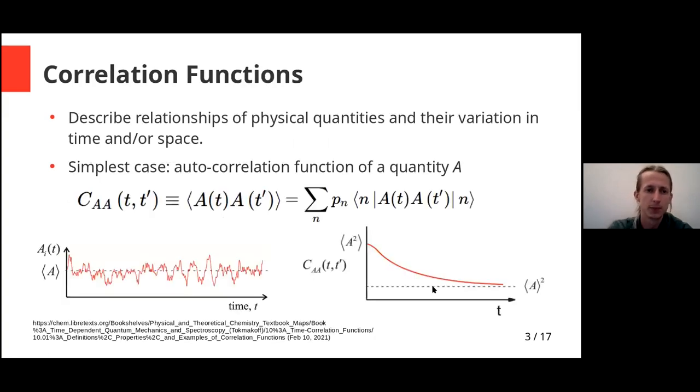So correlation functions describe the relationship between one or more physical quantities and their variation in time and/or space. The simplest case would be an autocorrelation function, and here in the graph on the left you see some data which is apparently quite random, but if you look at the correlation function you can actually get some information out of this.